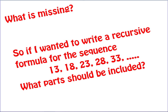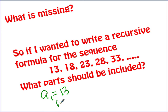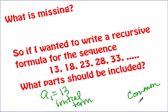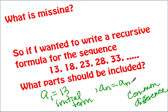Here's the sequence 13, 18, 23, 28, 33 going on forever. To write the recursive formula, I need the initial term — which is 13 — and the common difference — which is 5. So a-sub-1 equals 13, and a-sub-n equals a-sub-(n minus 1) plus 5.